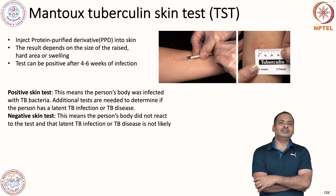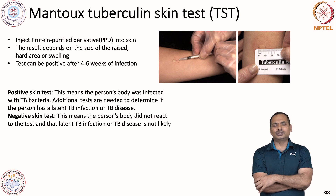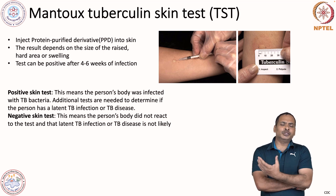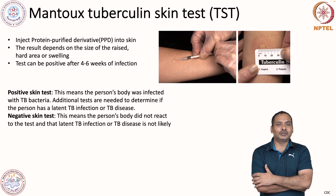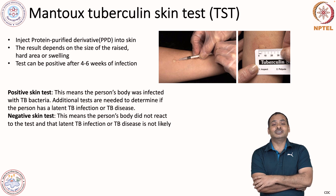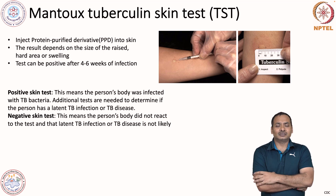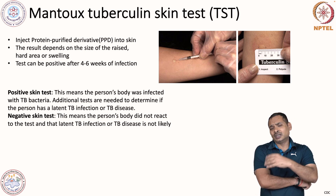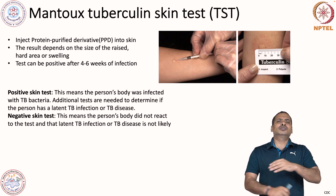Let us look at the tests. The Mantoux tuberculin skin test is used, which is not so common now but still used in some cases. The individual suspected with tuberculosis shows very clear signs and symptoms — you may have heard on radio and television: there is chronic coughing, dry cough, blood in sputum which we call hemoptysis, loss of weight, fever, and night sweats. These are the very prominent symptoms of tuberculosis.